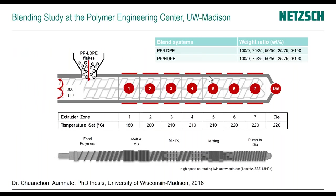I'll now go into a study performed at the University of Wisconsin-Madison when I was still a professor there. Dr. Onate conducted this work as part of her PhD study, and there are publications available on the topic. We made artificial blends of polypropylene and LDPE in different proportions using a twin-screw extruder and then analyzed the resulting blends using virgin material, regrind, and combinations of the two.